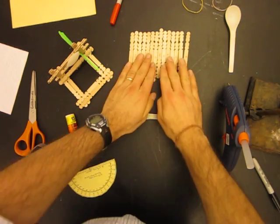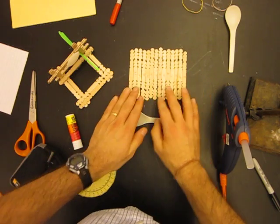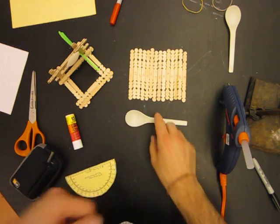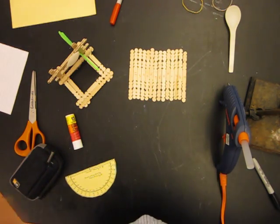So what you need are 14 craft sticks, or Popsicle sticks. I prefer the ones with the notches cut in them. It makes doing a few things with this project a little easier.